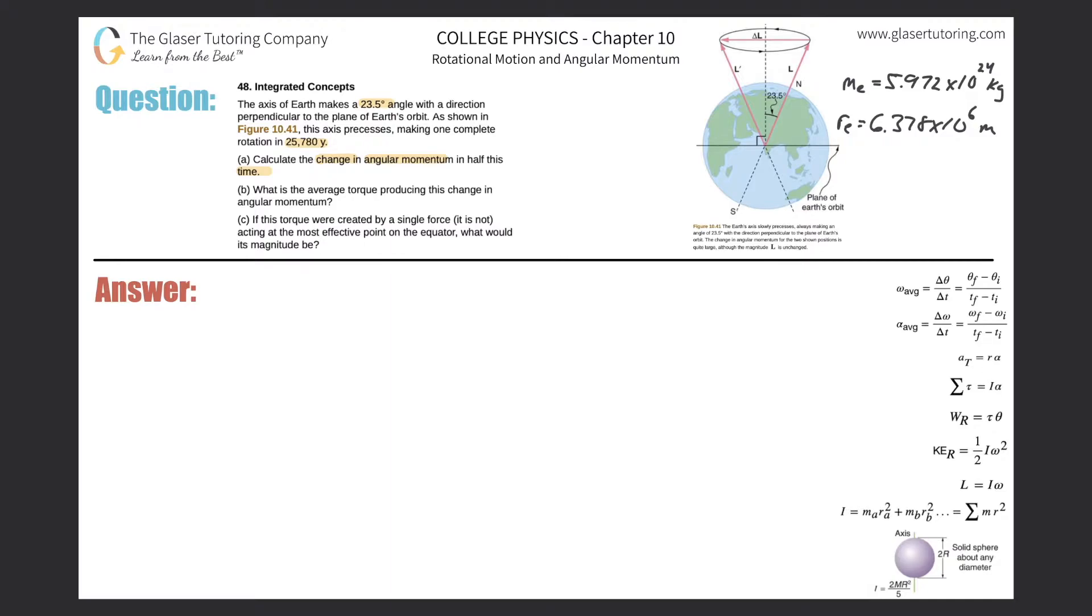Alright. So in this particular, let's just take a look at the picture at the top. Basically, we're going to treat the angular momentums as vectors, as they showed in the picture. And what we are tasked to do is to find the change in the angular momentum in half this time.